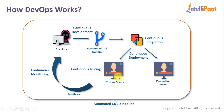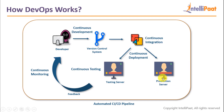So the developer pushes code to the version control system, it is identified by the continuous integration tool, which pushes it onto the testing server where it is built and tested. If the test succeeds, the continuous integration tool pushes it to the production server. If there are bugs found on the testing server, the feedback is given through continuous monitoring to the developer. If there are problems on the production server, it gets continuously monitored and logs are generated and stored using the continuous monitoring tool.